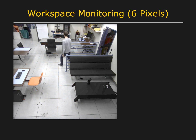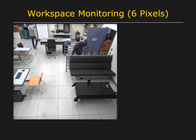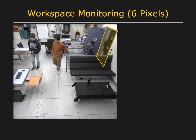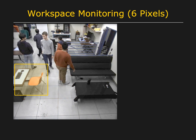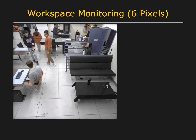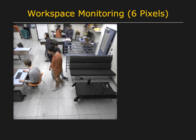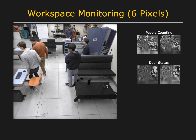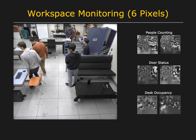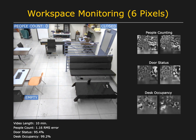In this workspace, the task is to count the number of occupants, determine whether the door is open or closed, and detect when the desk is occupied. All of these tasks were performed using just six freeform pixels: two for counting people, two for detecting the state of the door, and two for detecting the occupancy of the desk. Here are the results produced by the six-pixel minimalist camera overlaid on a video captured using a traditional camera.